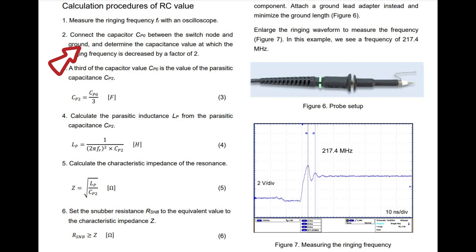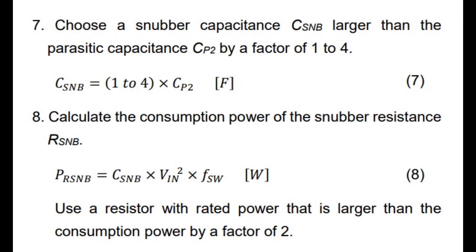From this capacitance value and ringing frequency, you can estimate the parasitic capacitance CP2 by this equation. Then we can estimate the parasitic inductance LP also by this equation. And we can calculate the characteristic impedance of the resonance by this equation. For me, as a rule of thumb to start with, the snubber circuit can be chosen to be CP0, which decreases the ringing frequency to half or few multiples of that. For the snubbing resistor, it could be equal to the characteristic impedance Z. And we should take care of power rating that can be calculated using this equation.